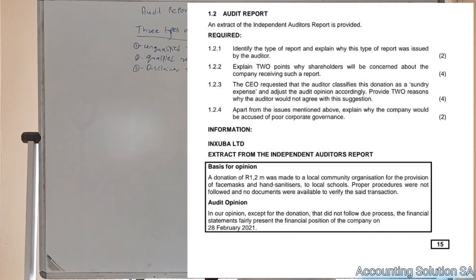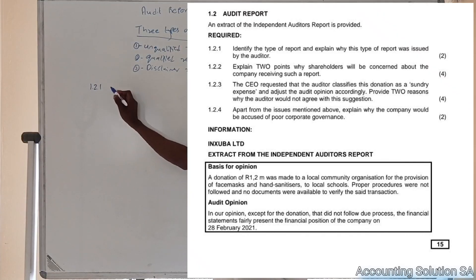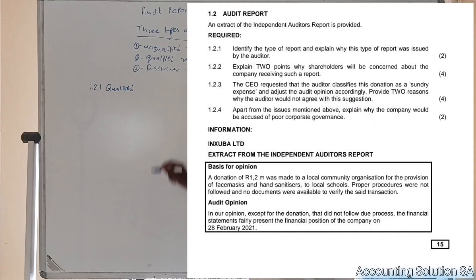Question 1.2.1: Identify the type of report and explain why this type of report was issued by the auditor. In this case it's going to be a qualified report. The reason why it's qualified is because the financial statements are good but there was only one error identified, which was the donation.